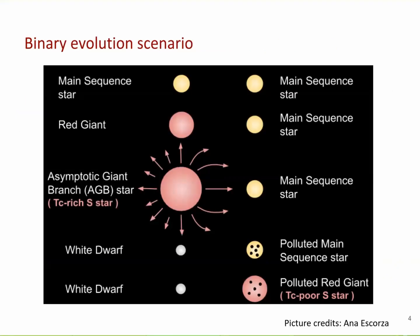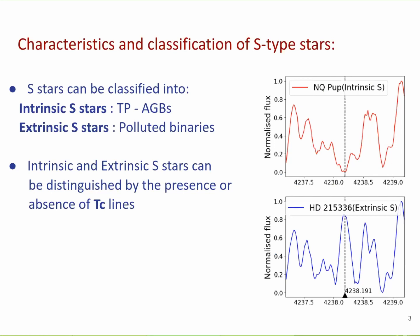In a binary evolution scenario, the extrinsic star is a star which has not yet itself evolved to make the S-process elements. It owes its S-process elements to a former binary interaction with a former AGB companion, which has now evolved into a white dwarf. We distinguish intrinsic stars from extrinsic stars by the use of technetium, which is an S-process element with no longer a stable isotope.